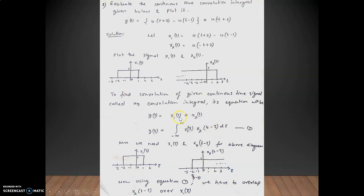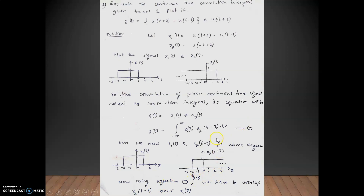Replacing t with τ: x1(τ) is the same signal with τ as the variable, defined from -2 to 1. For x2(t-τ): we reverse x2(τ) to get x2(-τ) and then shift by t, giving x2(t-τ) with its right boundary at τ = t - 2, extending to the right. We now slide x2(t-τ) across x1(τ).